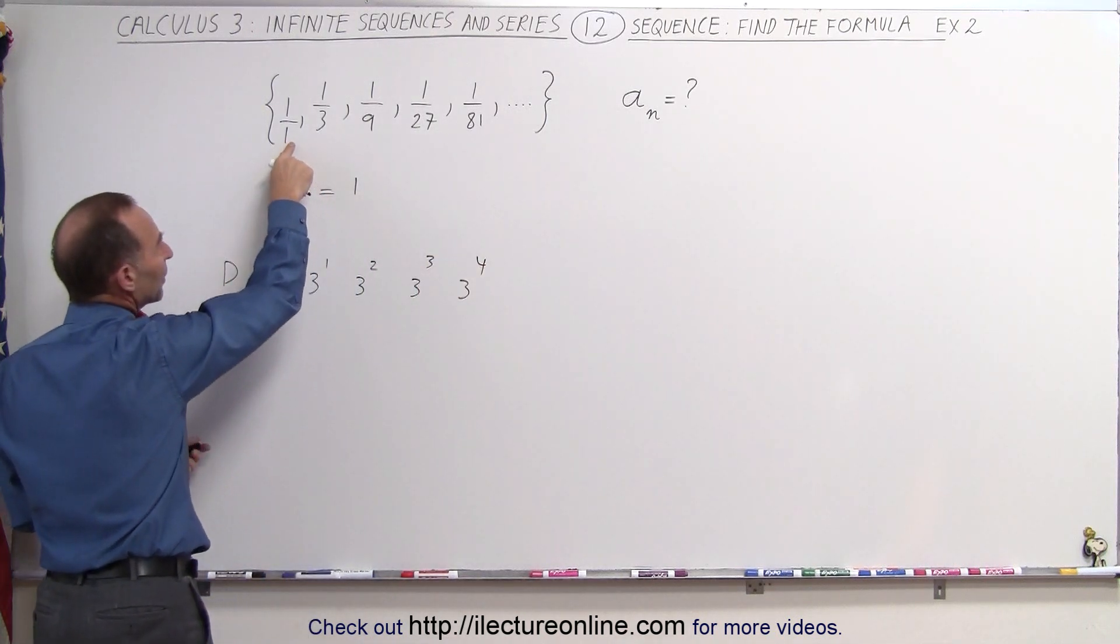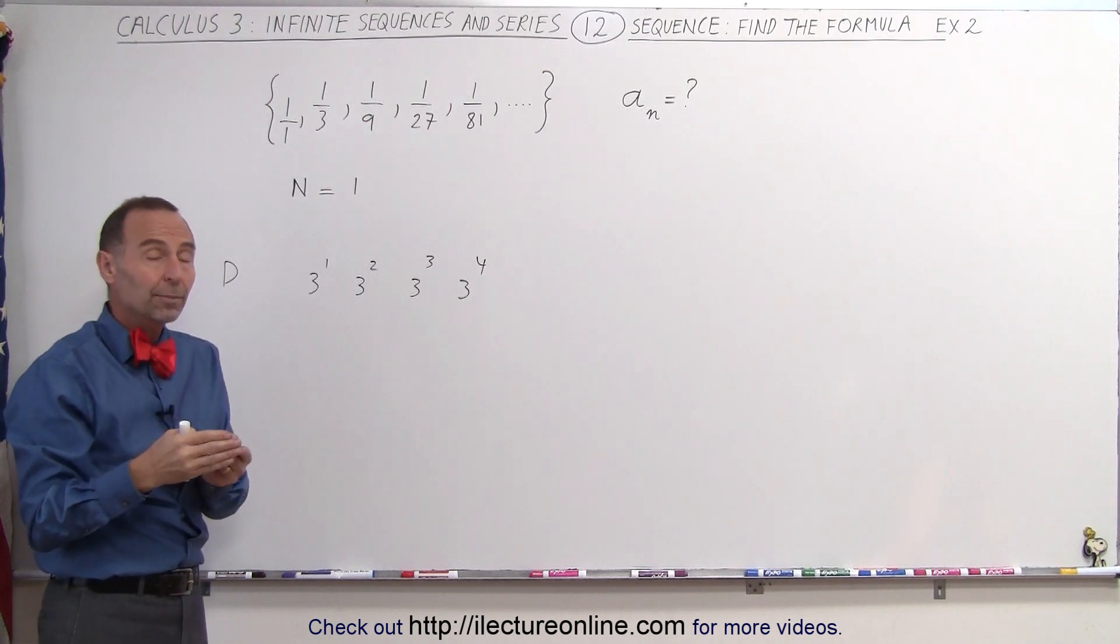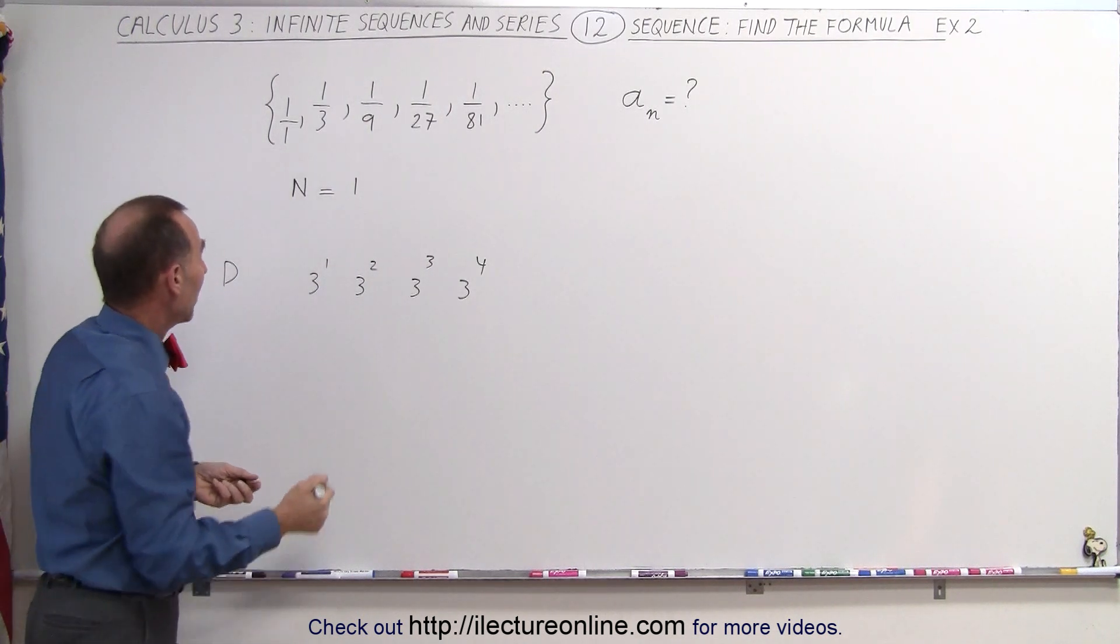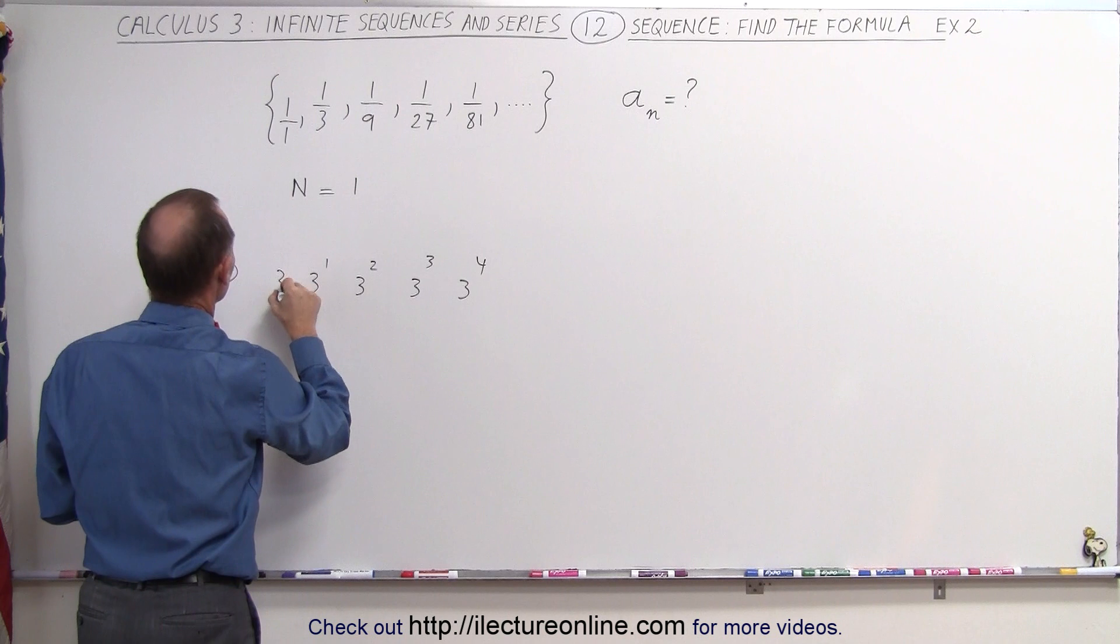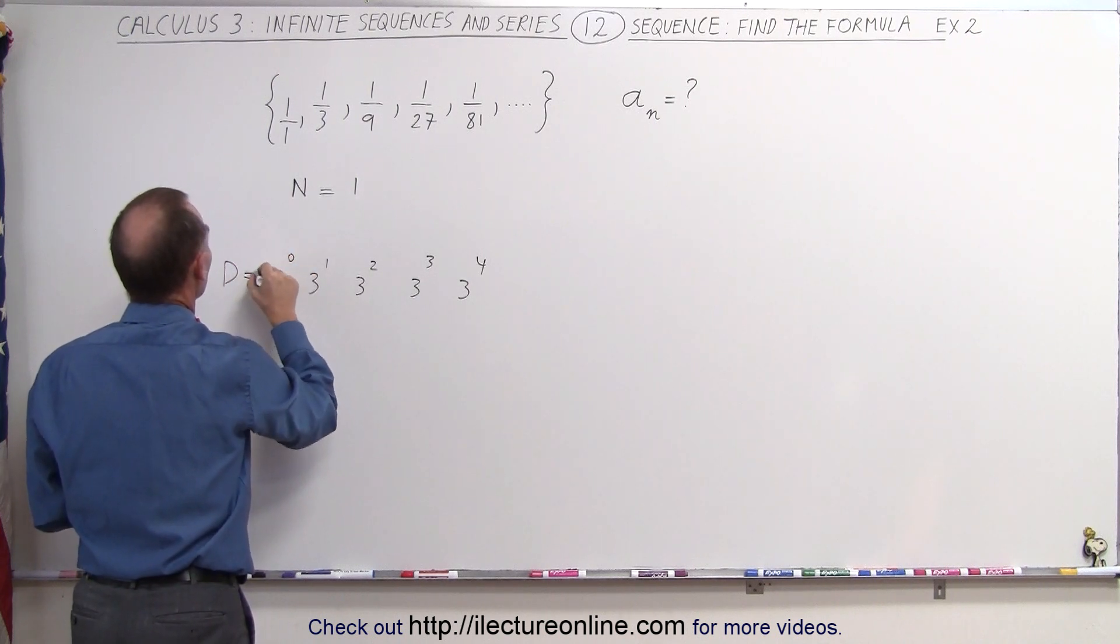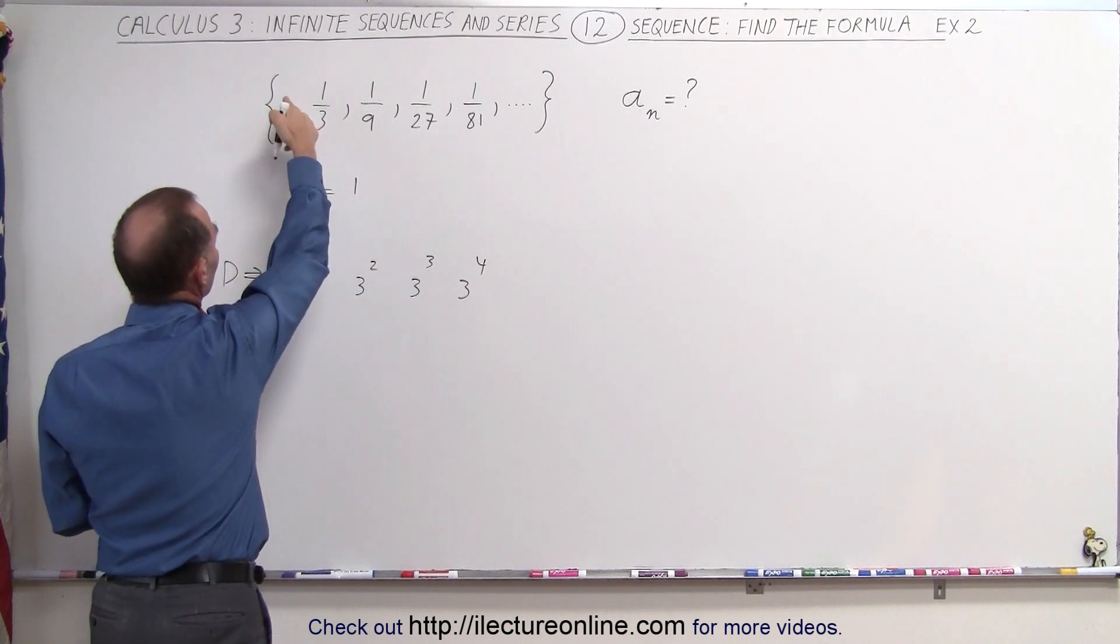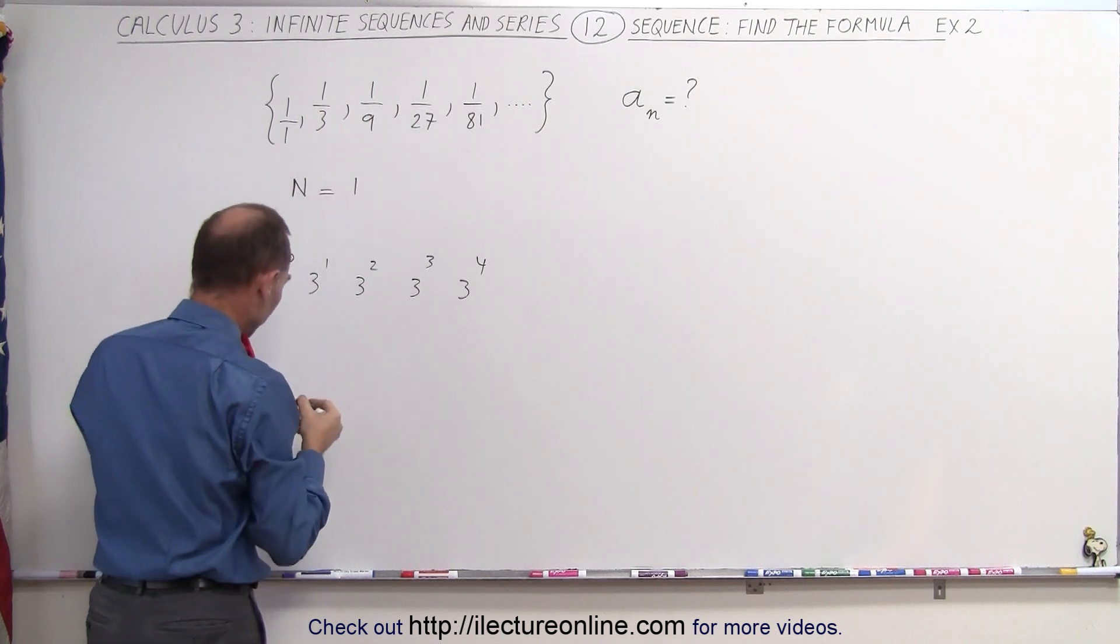And if we assume that the denominator here is equal to 1, 1 can be obtained by saying 3 to the 0 power. So really, the denominator here is 3 to the 0 power. So that's the corresponding denominators for the first element, for the second element, for the third element.